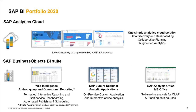This gives us the SAP BI portfolio for 2020 and 2021. For companies looking for the cloud: SAP Analytics Cloud for BI, planning, and predictive. For companies staying on-premise with the Business Object BI suite, we recommend three tools: Web Intelligence for ad hoc query and operational reporting — now also positioned as an interactive reporting and self-service dashboarding tool — SAP Lumira Designer for dashboards, and SAP Analysis for Office as the Microsoft Office add-on.